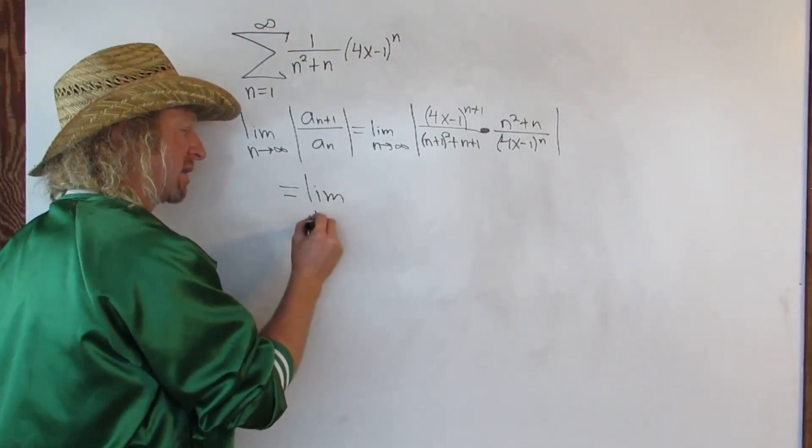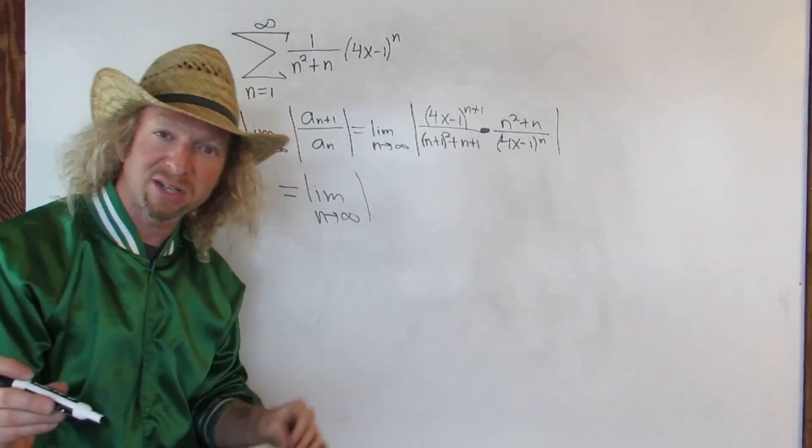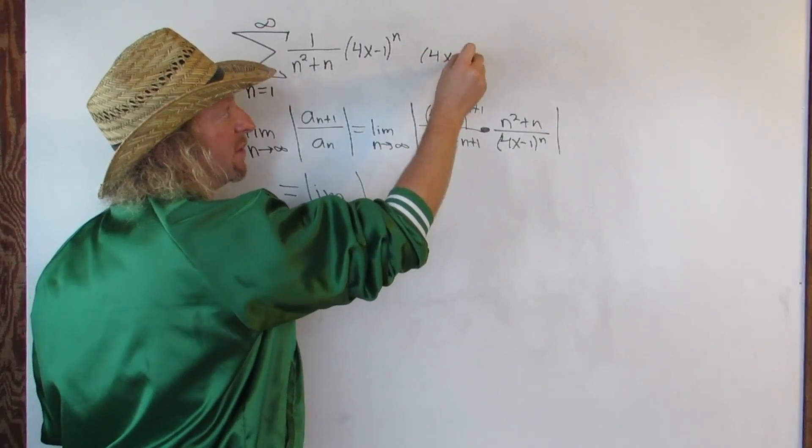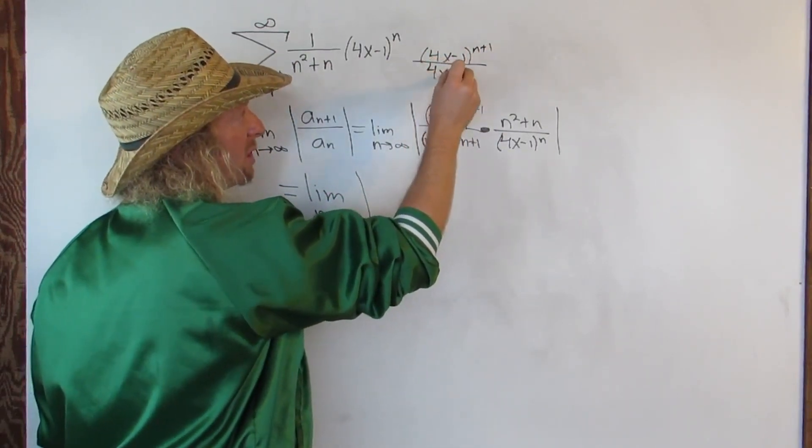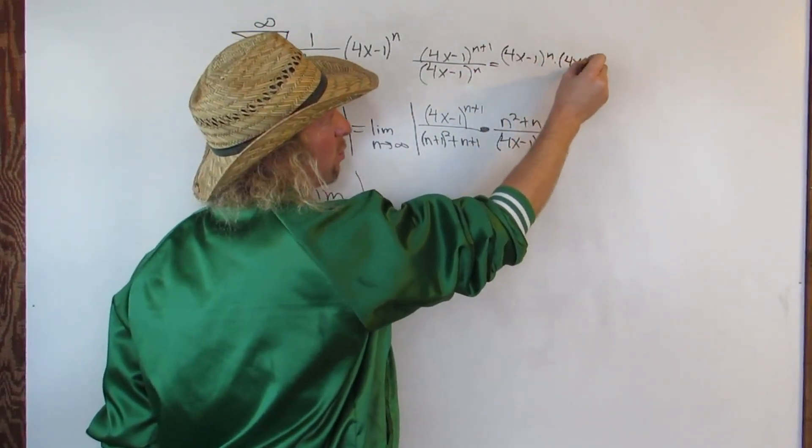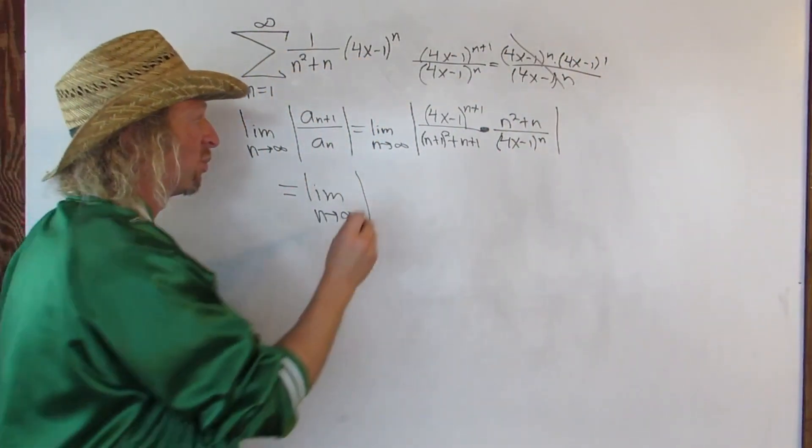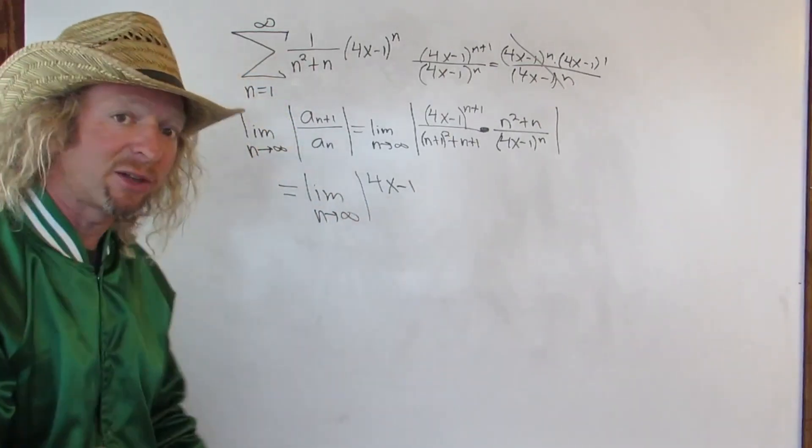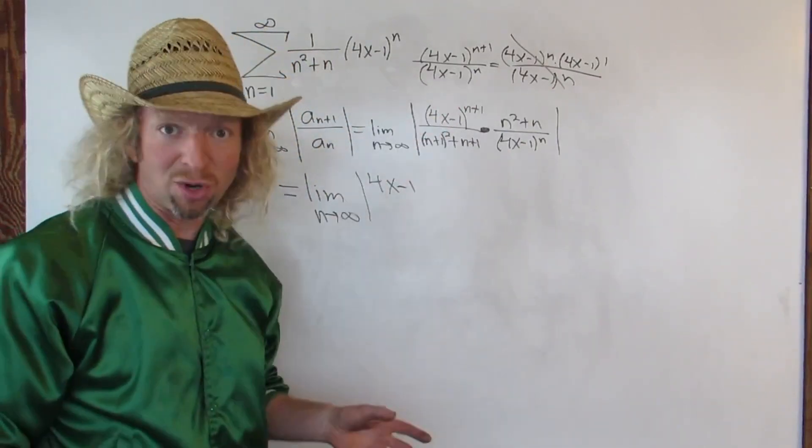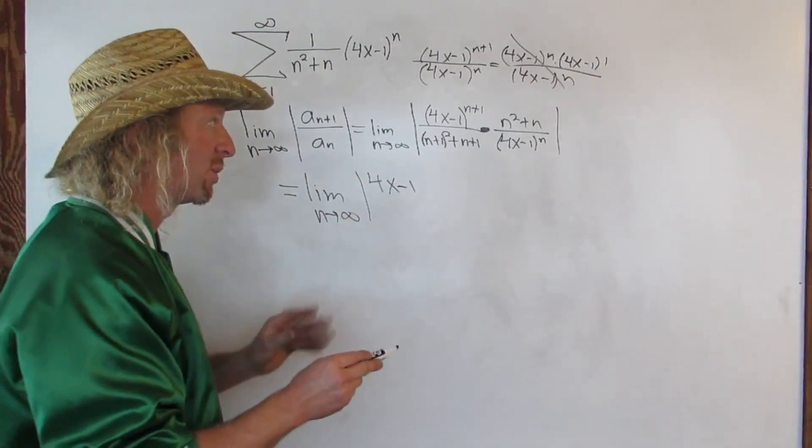This is equal to the limit as n approaches infinity. So now we can simplify things a little bit. After you do a couple of these, you'll get really good at it. So we have this over this. So we have 4x minus 1 to the n plus 1 over 4x minus 1 to the n. So what you can do here is you can break it out. It's 4x minus 1 to the n times 4x minus 1 to the 1 over 4x minus 1 to the n. Boom, they cancel. So you just get 4x minus 1. And notice I didn't drop the absolute value. The reason you can't drop it is because you don't know what x is. x could be positive, it could be negative, so you can't drop it. If you only have n's, you could drop it because n is a positive integer, so there's no problems. But x, x is a real number. It could be negative, so we have to be wary.